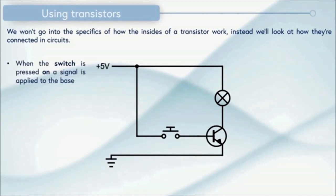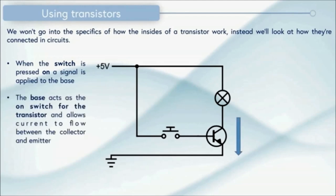When the switch is pressed on, so it's pressed down and it's connected, a signal is applied to the base which is the input side of the transistor. The base acts as the on switch for the transistor and allows current to flow between the collector and the emitter. So you can see the arrow on the transistor symbol indicates which direction the current will flow through. This means that the light which we've connected can turn on.